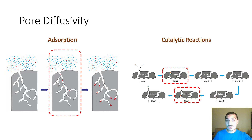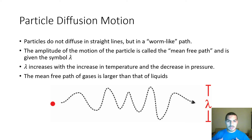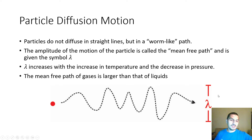To understand pore diffusion better, we will talk about what is called the mean free path — something related to the motion of molecules. A gas molecule diffusing does not travel in a straight line; it moves in a wavy shape, going up and down. This amplitude of motion is called the mean free path, given the symbol lambda.